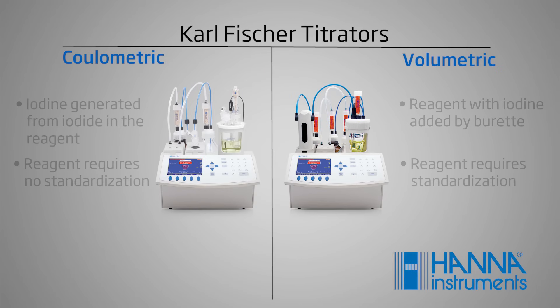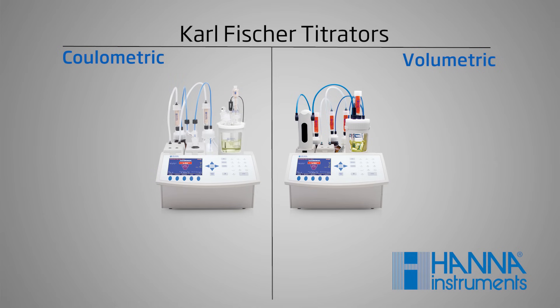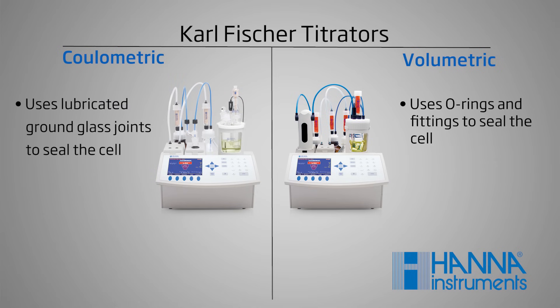Because of the way iodine is added, there are a few other differences. For example, volumetric and coulometric titrators use different reagents. Sometimes the different titrators will also have different methods for sealing the cell from the atmosphere. Coulometric models tend to require more tightly sealed vessels.